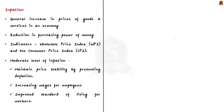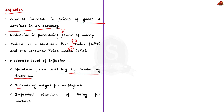Before understanding OMO, let us learn some basics about inflation. Inflation is a general increase in the prices of goods and services in an economy, which means each unit of currency buys fewer goods and services. Consequently, inflation corresponds to a reduction in the purchasing power of money. The two main indicators of inflation in India are the Wholesale Price Index, WPI, and the Consumer Price Index, CPI. A moderate level of inflation is always necessary to maintain price stability by preventing deflation and supporting consumer spending.